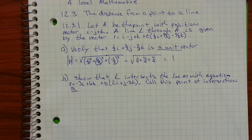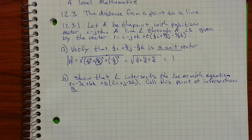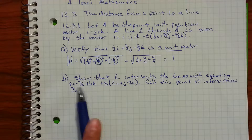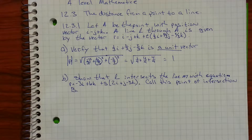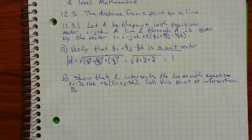The next part says: show that L intersects the line M with equation R equals 3i plus 6k plus s times the quantity 2i plus j minus 3k. Notice there is no j term in the first part, so that value is going to be 0. I'm going to rewrite this and set up x, y, and z components to find when the two lines are equal.